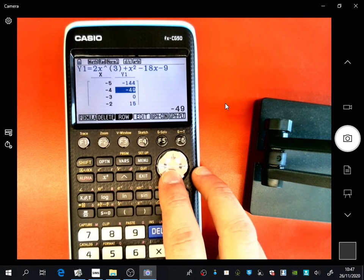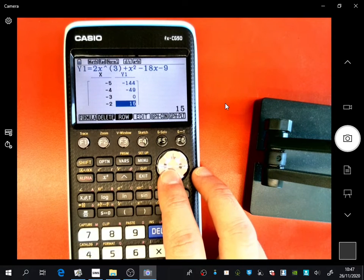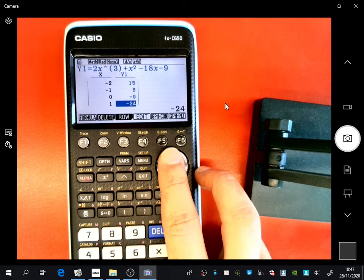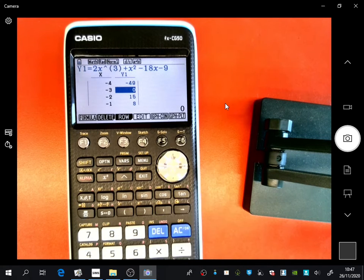And then the calculator, when I press table, will have done all the substituting for me. So the answers are 144, minus 49, 0, 15, 8, minus 9. So actually, you can see here, minus 3. When you sub in minus 3, you do get an answer of 0.